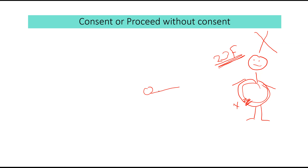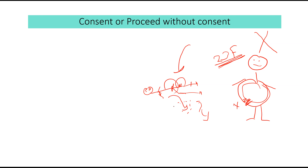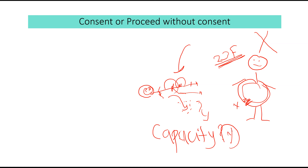Question two: a patient presents with a fracture femur and pelvis, is bleeding and going to die, but is fully aware and fully capacitated. You tell him you need to operate. Ask yourself: does this patient have capacity? Yes. Therefore he is responsible for his life or death, and you cannot proceed without his consent.